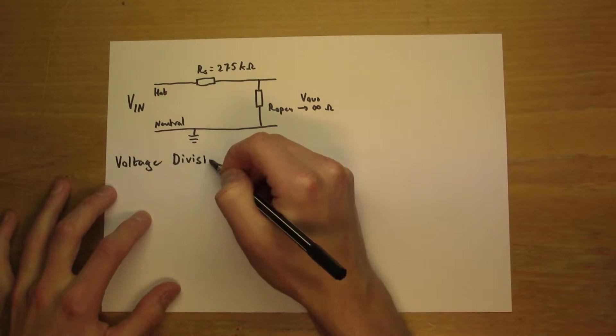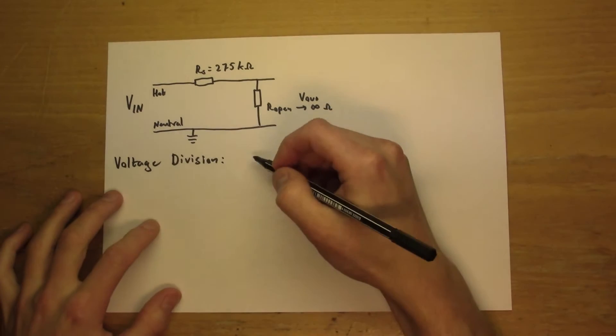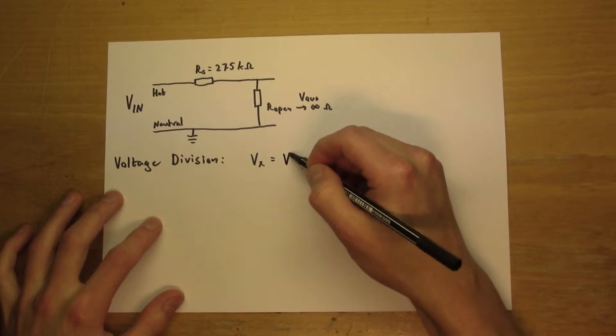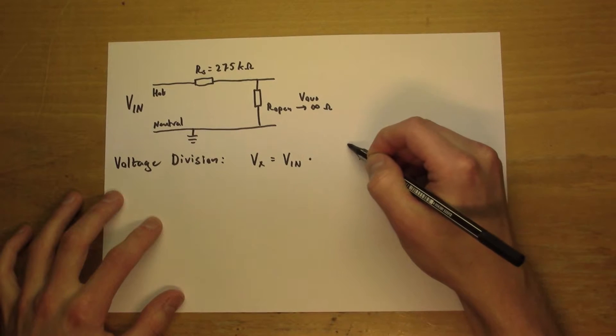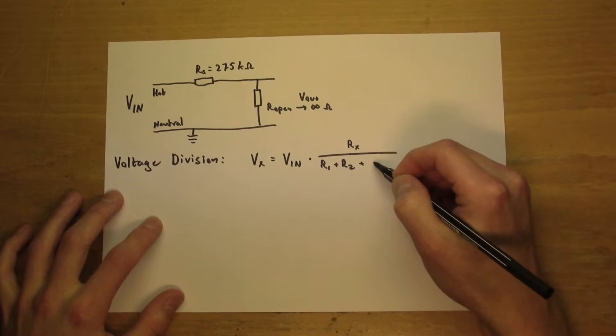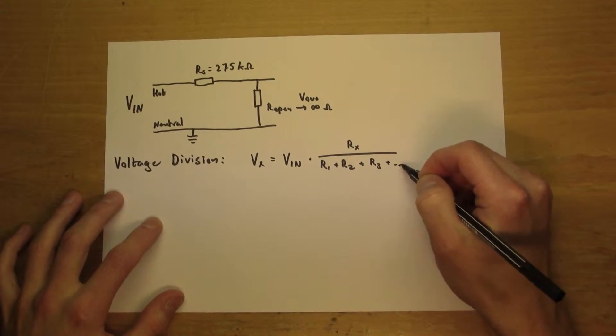This way we can apply the formula for voltage division to find out the voltage of the open circuit. The voltage over a certain component in a series network is given by the voltage over the whole network times the resistance or impedance for this component, divided by the summed up resistance of all components in the series network.